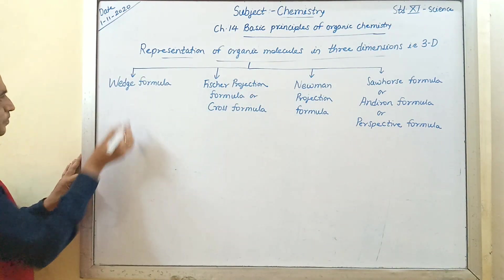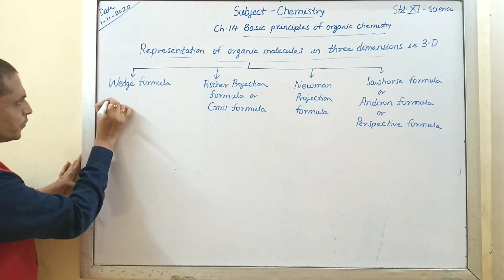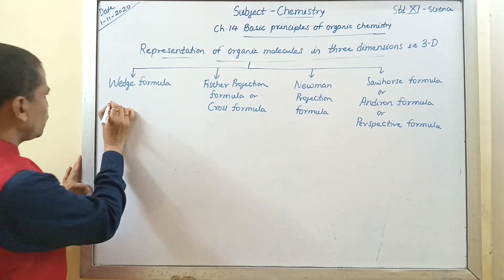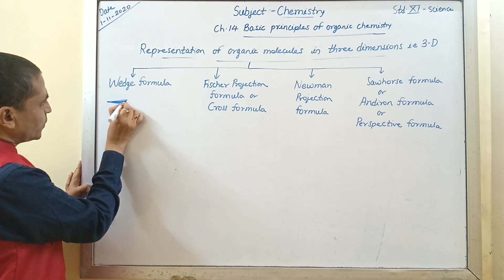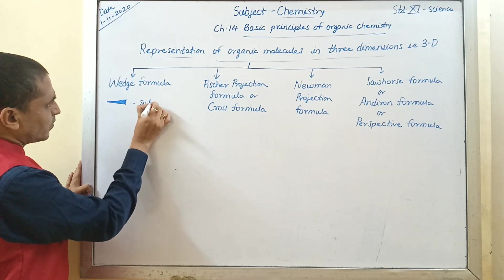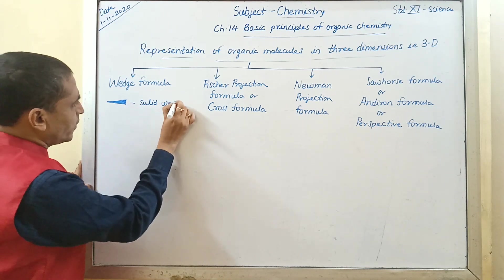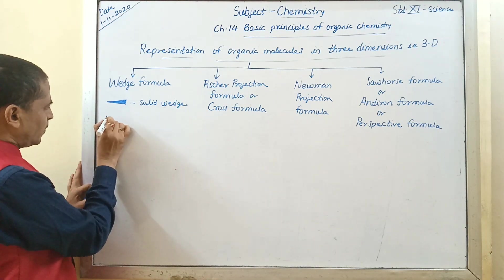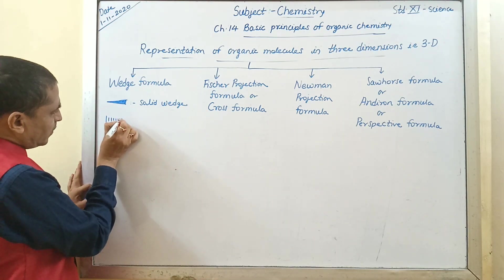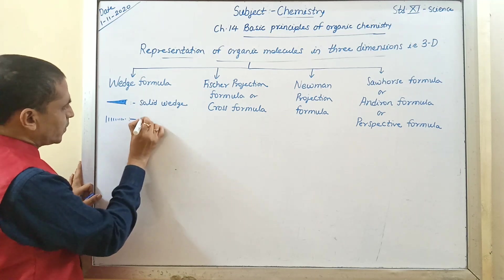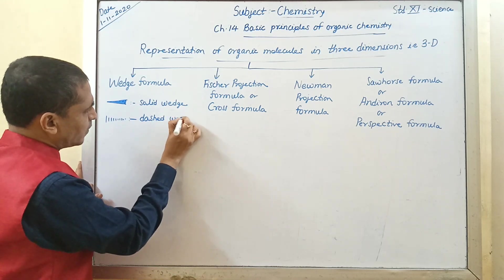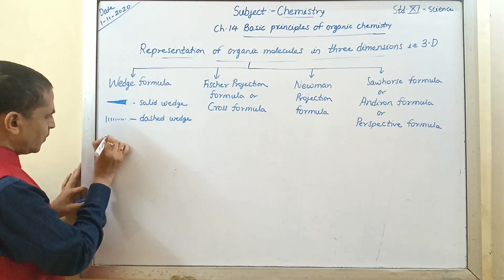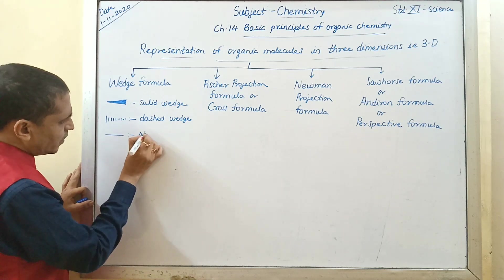So let us start with wedge formula. There are some symbols we are going to use. This symbol is called as solid wedge. This is solid wedge. This is dash wedge. This is normal line.